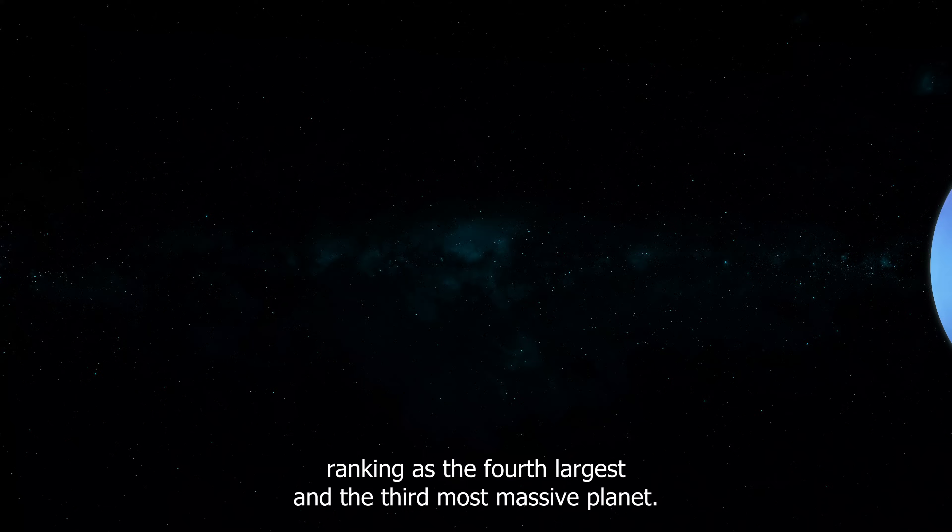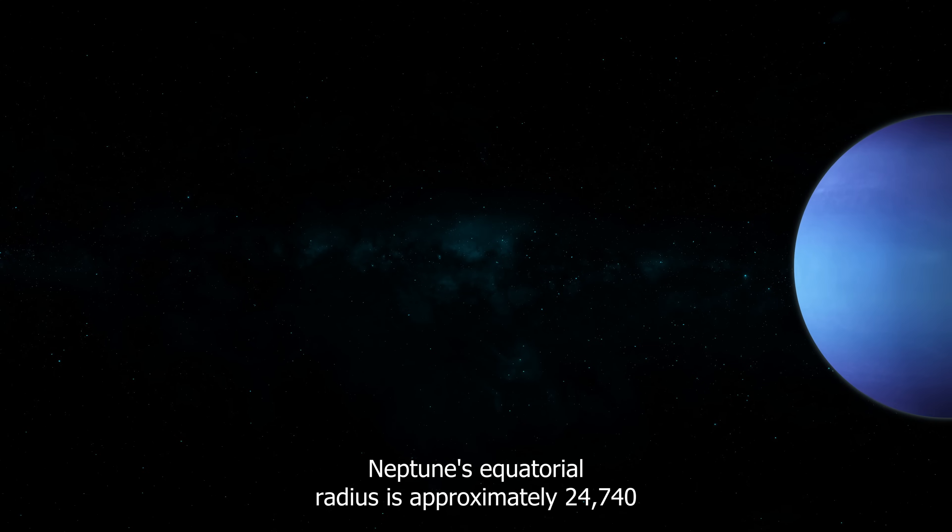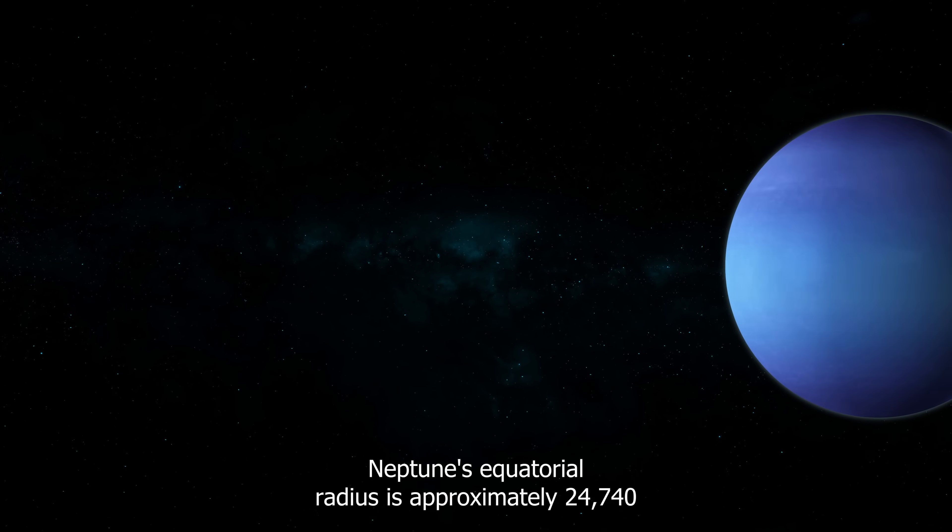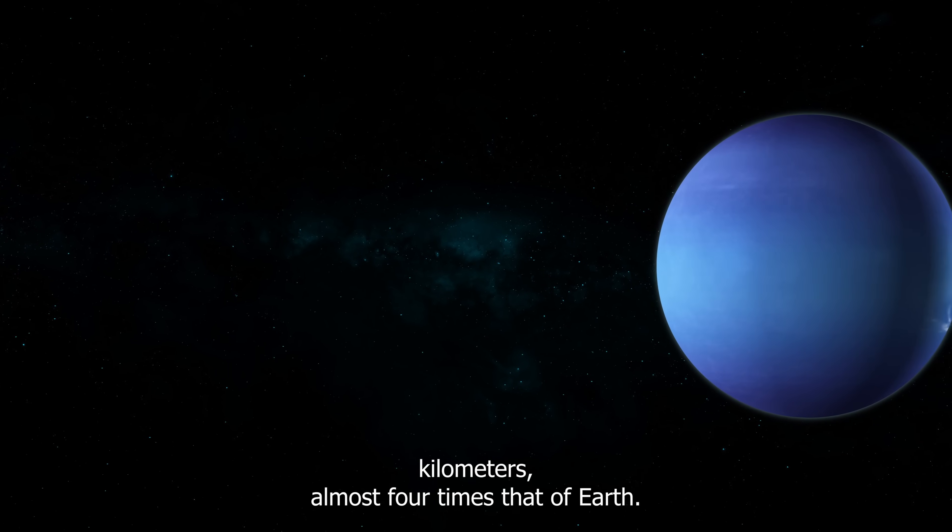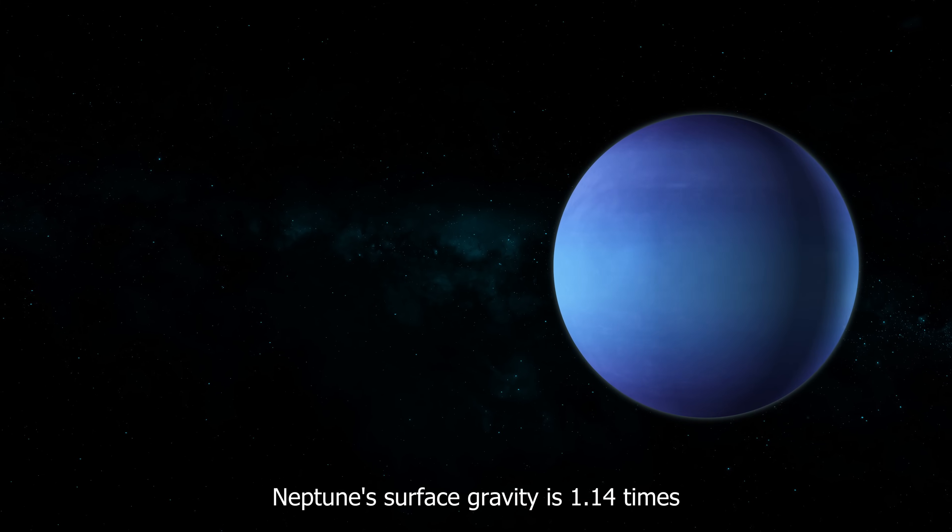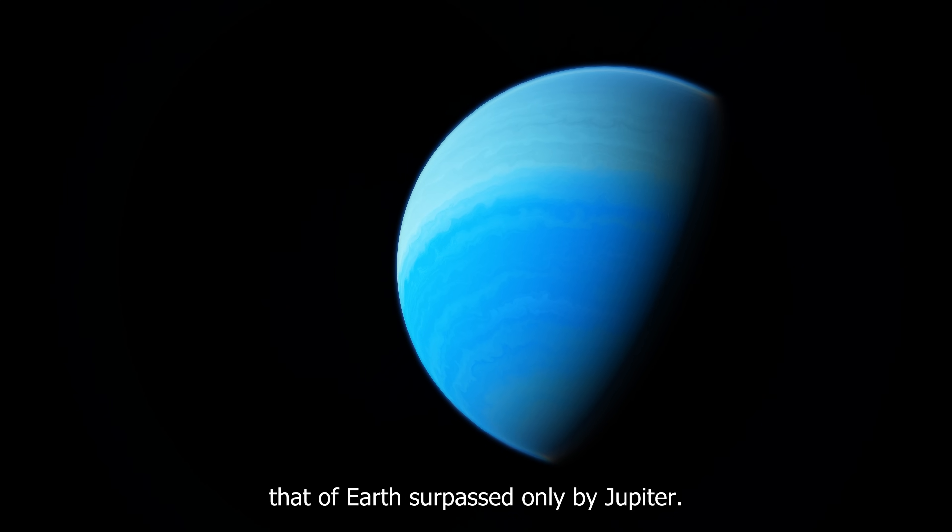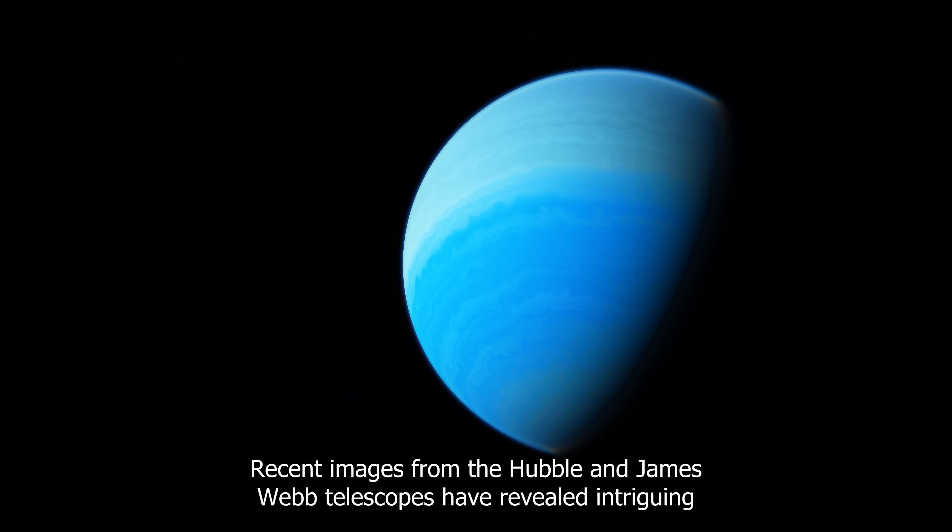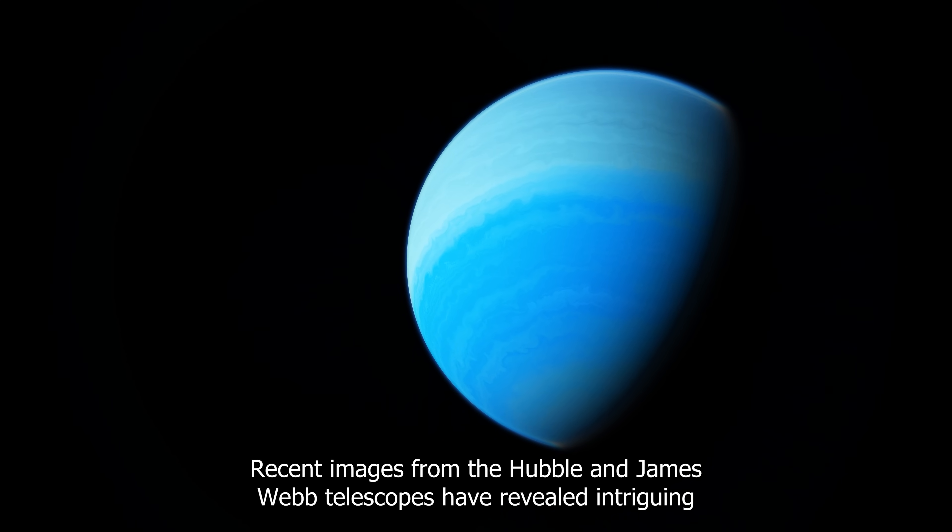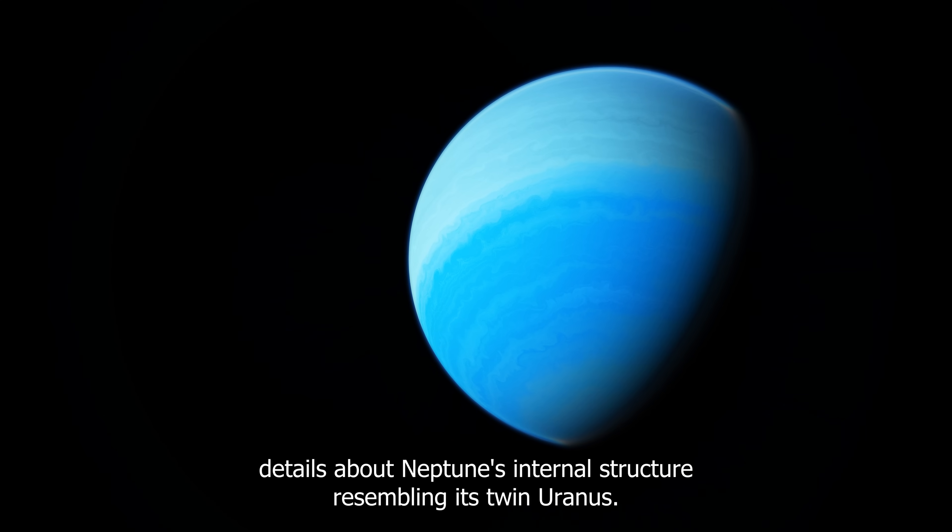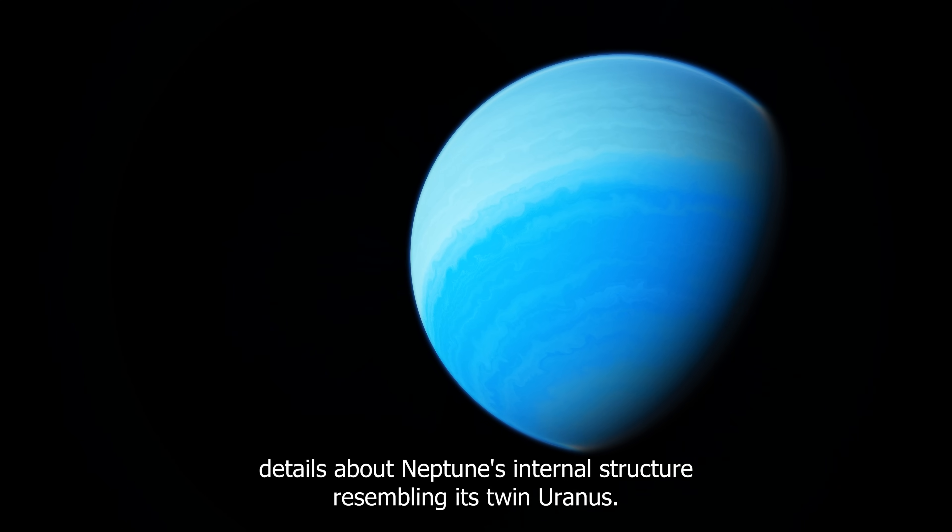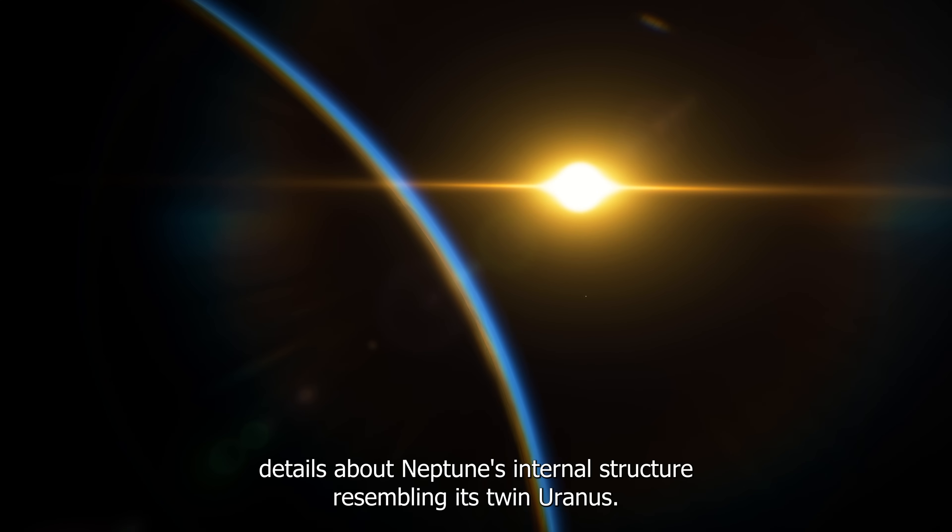Ranking as the fourth largest and the third most massive planet, Neptune's equatorial radius is approximately 24,740 kilometers, almost four times that of Earth. Neptune's surface gravity is 1.14 times that of Earth, surpassed only by Jupiter. Recent images from the Hubble and James Webb telescopes have revealed intriguing details about Neptune's internal structure resembling its twin, Uranus.